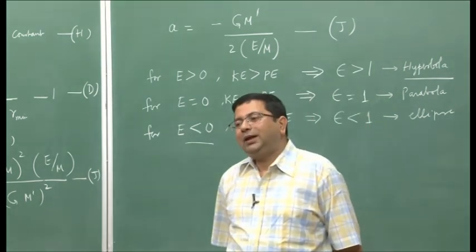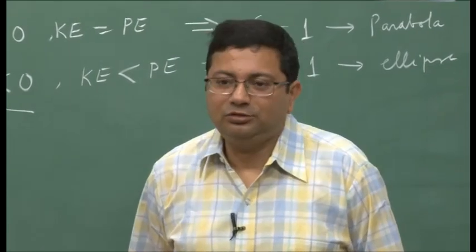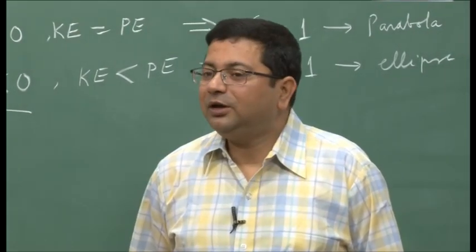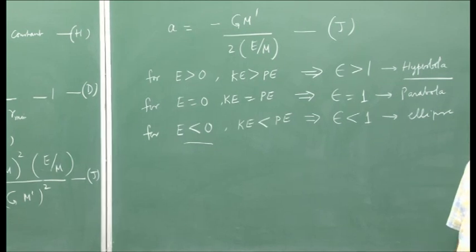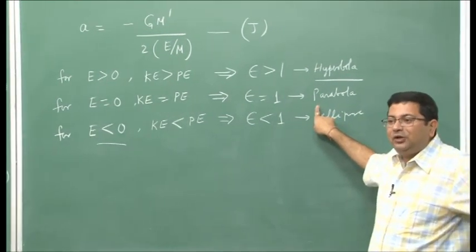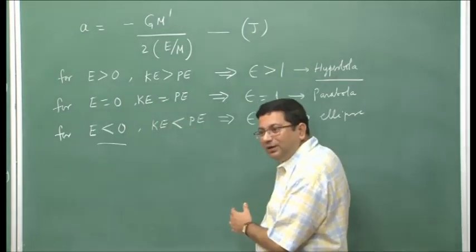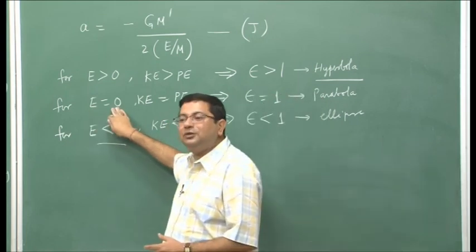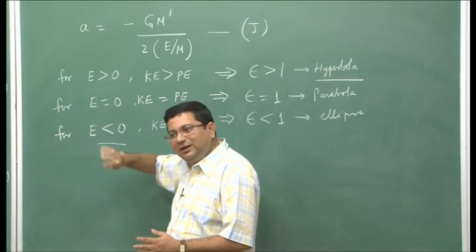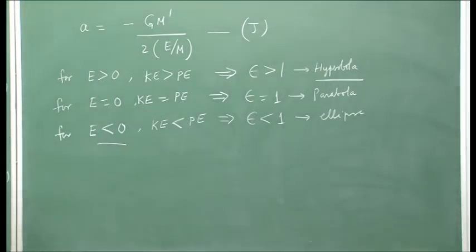Now, regarding escape velocity: out of these cases, which gives us the escape scenario? The parabola — flyby — is the escape case. If we have to escape from the gravitational pull of a heavenly body like Earth, we take a parabolic path, corresponding to epsilon equal to 1, which means E equal to 0. There should be no net energy — only then will the vehicle escape. From this we can get an expression for escape velocity.